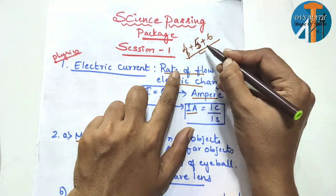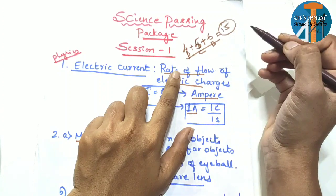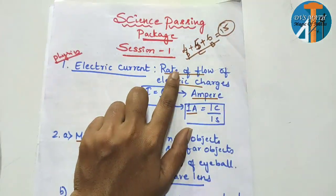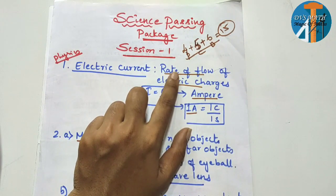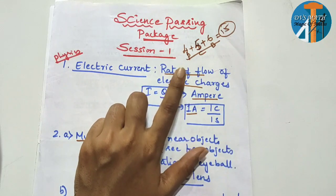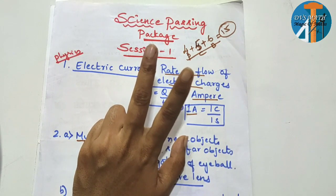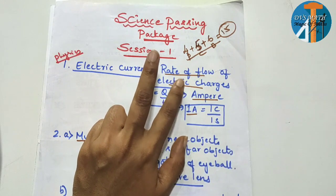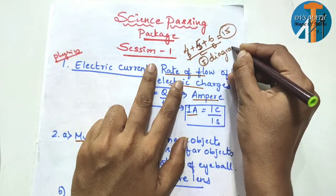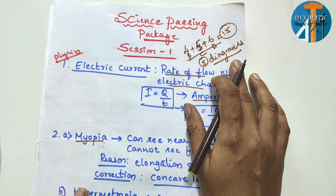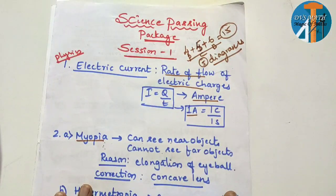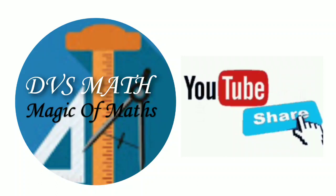So today we discussed 4 questions from physics, 5 from chemistry, and 6 from biology — total 15 questions with short answers. Also practice diagrams: brain diagram is very important. Next session diagrams to practice include electrolysis of water, electrolytic refining of copper, electric motor, electric generator. Please like the video and share with friends appearing for the science supplementary exam. Subscribe to the channel for the next session.